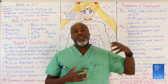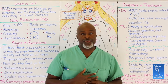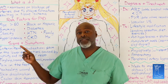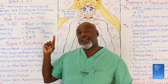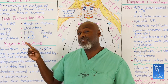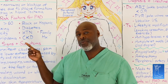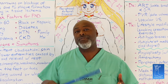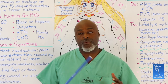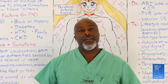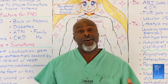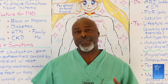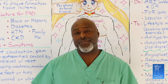We'll go through amputations, vascular surgery, and carotid surgery in future videos. The most important takeaway is understanding your risk factors. If you have diabetes, you should not be smoking. If you have diabetes and a family history of peripheral artery disease — if your uncle or grandmother lost a leg — you absolutely should not be smoking. If you have risk factors for PAD, you need to be on aspirin, an antihypertensive, and a statin. That's the key lesson here.